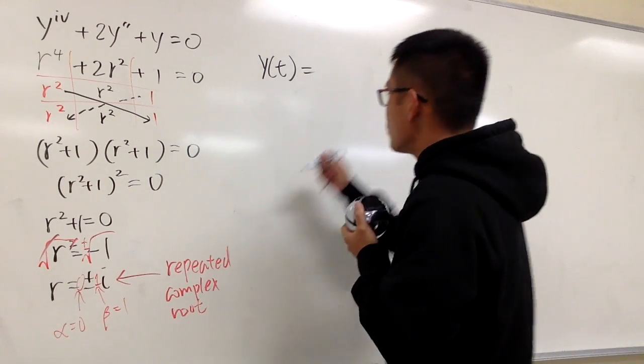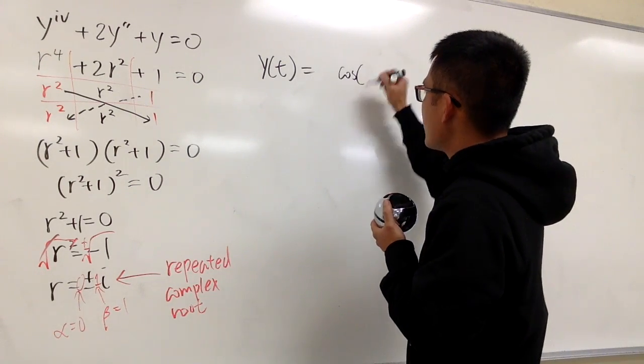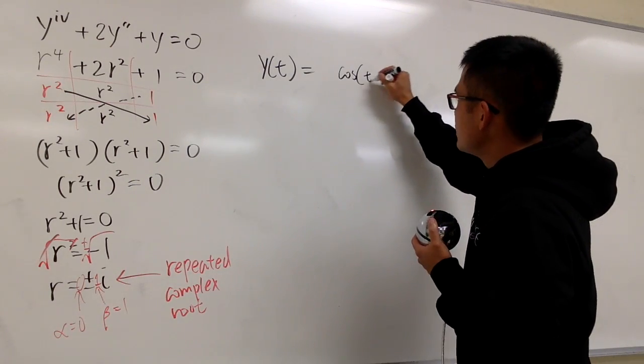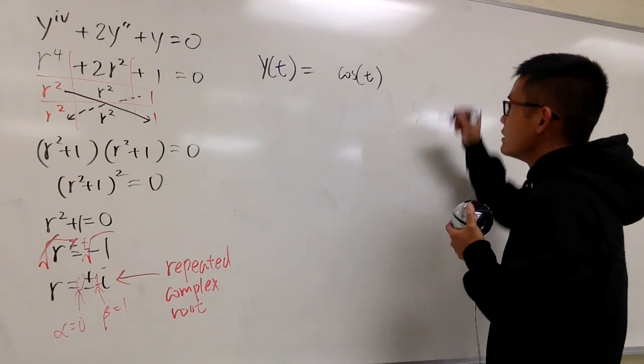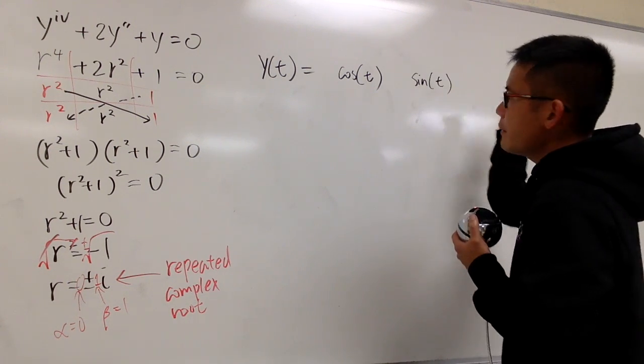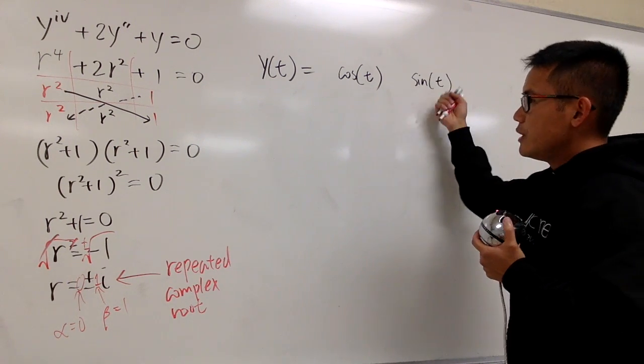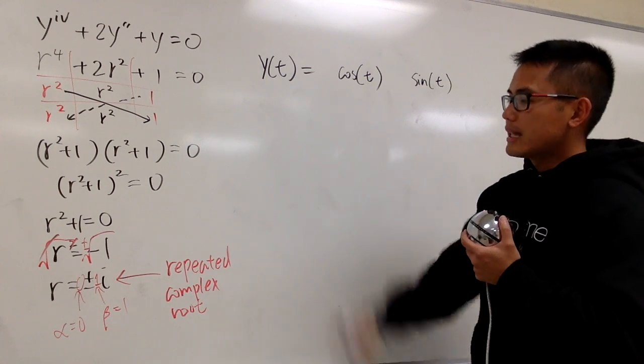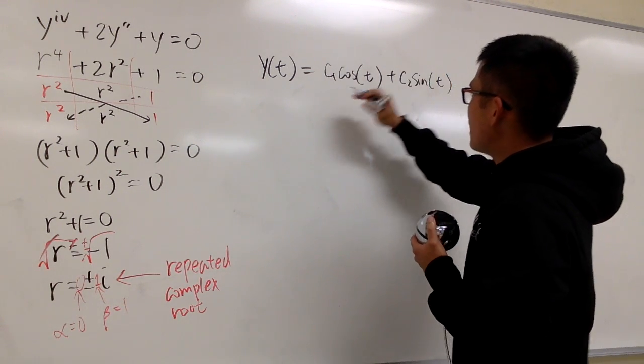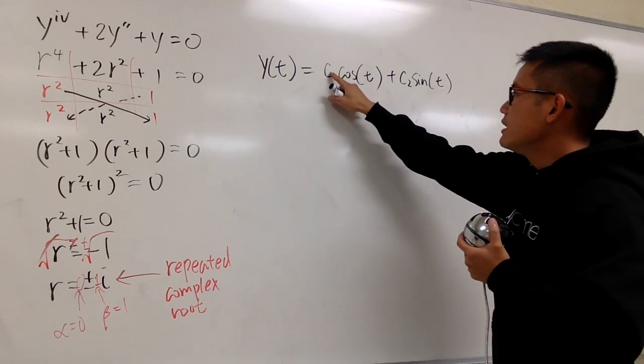Let me just put down this one for you guys. First one, cosine of beta, which is just 1, so 1t. Let me just write it down as t. And the next one is going to be sine of beta, which is 1 and then t. These are the building blocks to the general solution to that, and you know you have to attach the c1, c2, add them up. And this is it.